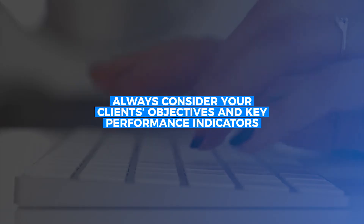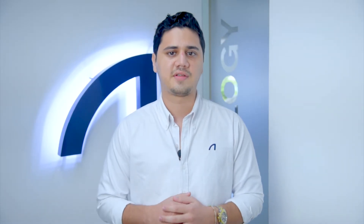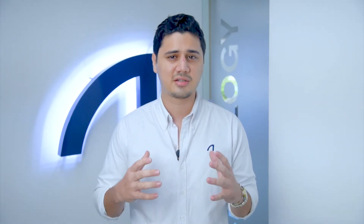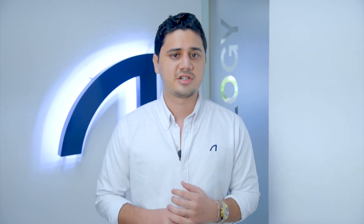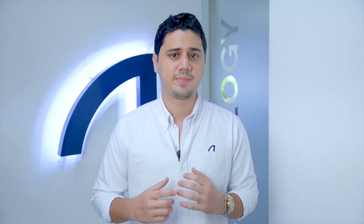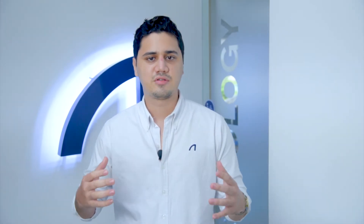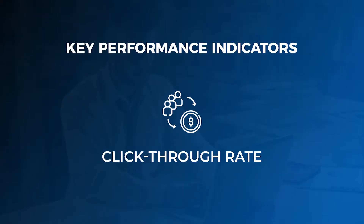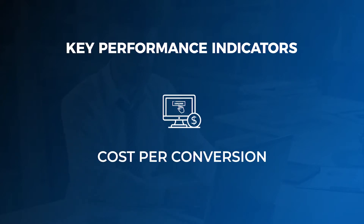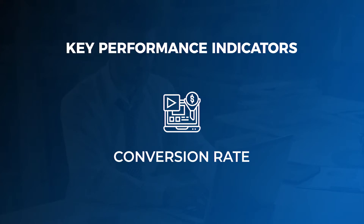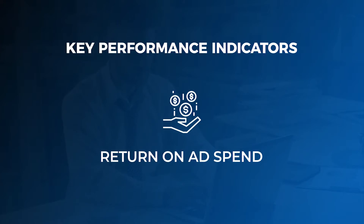Always consider your client's objectives and key performance indicators. To optimize your Google Ads campaigns, you must have a clear understanding of what your KPIs are. Establishing your campaign objectives will help you gain a better perspective for your optimization strategy. The most common KPIs are clicks, click-through rate, cost-per-click, conversions, cost-per-conversion, conversion rate, and return on ad spend.